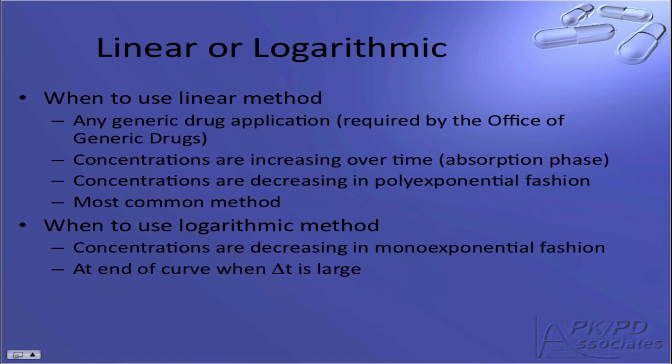Since there are two estimation methods, it is often asked when to use each method. There are many complicated algorithms that have been developed to help answer this question. However, in my mind, it probably doesn't make too much difference. These are estimates only, so as long as you are consistent, the interpretation will not change very much. The Office of Generic Drugs at the FDA prefers the linear method, so you should use it on all generic drug studies. The linear method should be used when concentrations are increasing over time, or when they are decreasing in polyexponential fashion. Overall, the linear method is the most commonly used method. The logarithmic method is slightly more accurate when concentrations are declining in monoexponential fashion. This is because this method uses log linear instead of linear interpolation in the calculation. This method is particularly accurate at the end of a curve when the time difference between data points is very large.